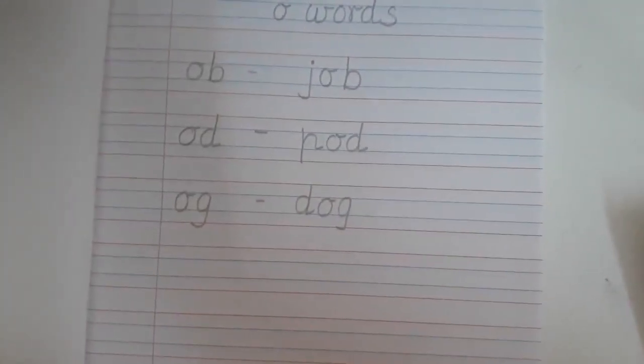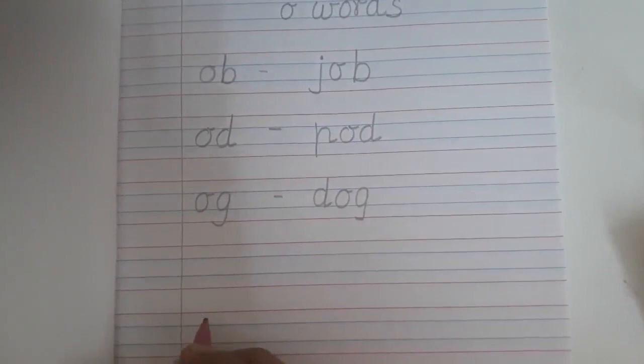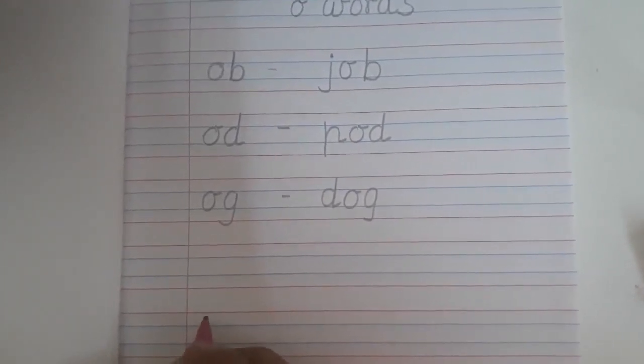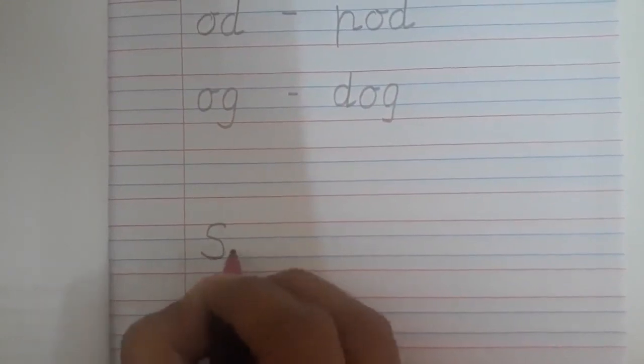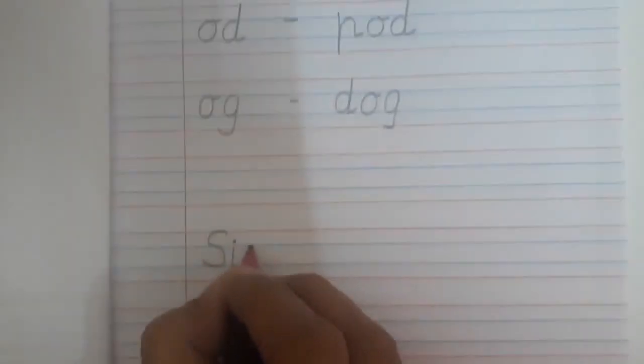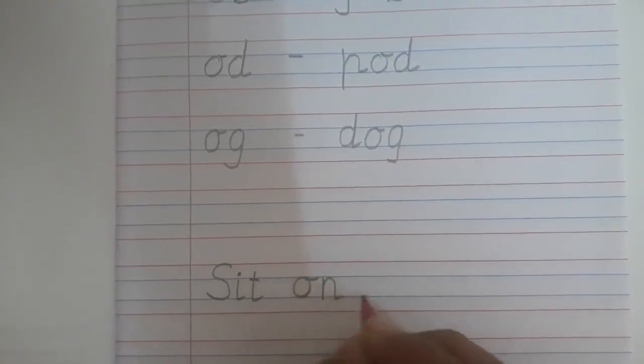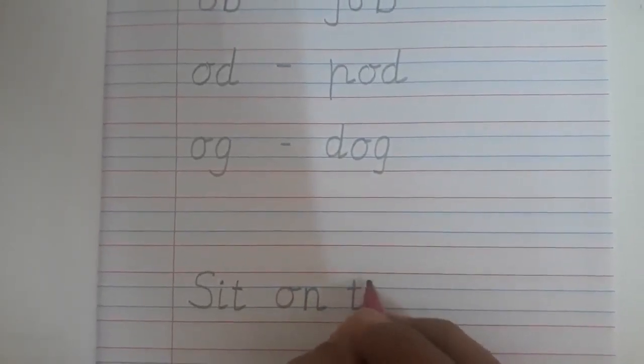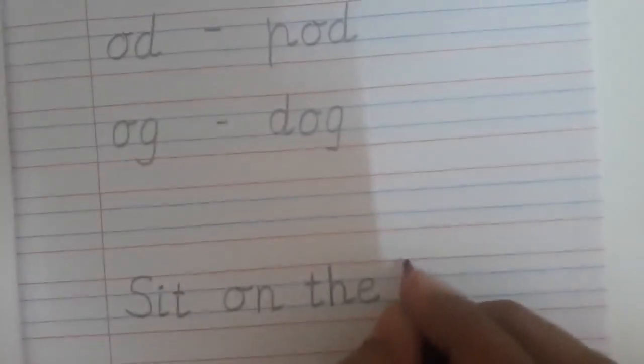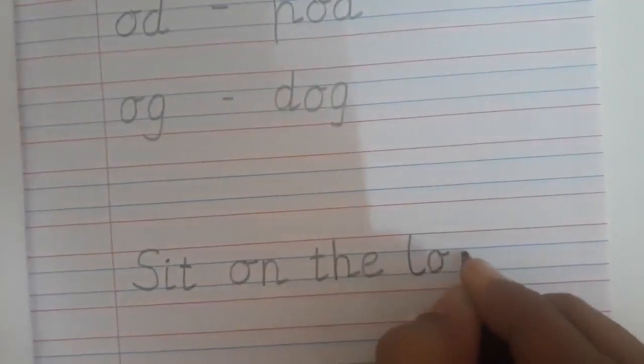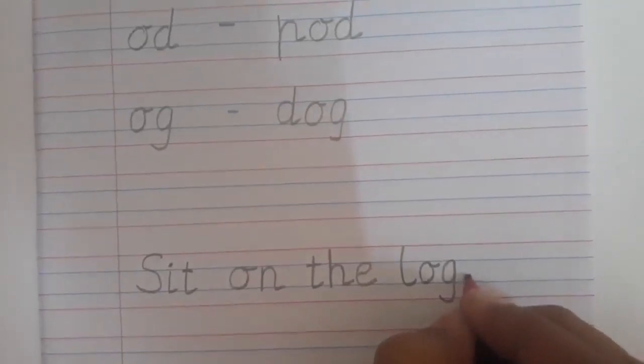Now we are going to write one sentence. Whenever we write a sentence, first of all what we write, first letter of the sentence will be capital. So here I am writing sit. S will be capital, then everything is small. Sit on the log. Now when we complete the sentence, we always put full stop. So here it should be full stop.